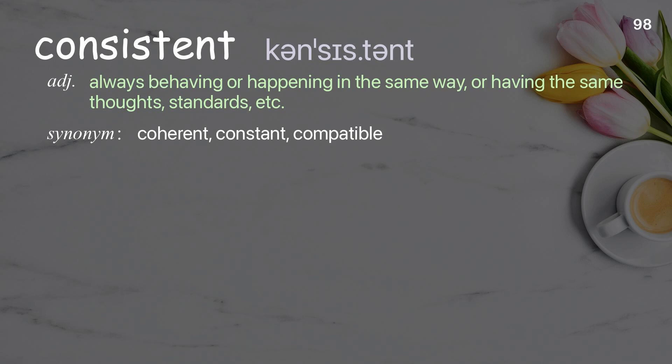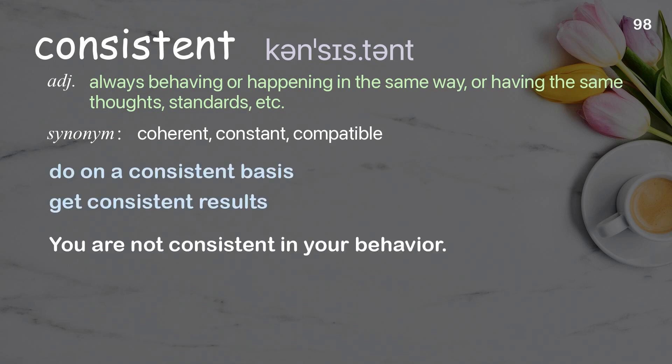Consistent: always behaving or happening in the same way, or having the same thoughts, standards, etc. Examples: do on a consistent basis, get consistent results. You are not consistent in your behavior.